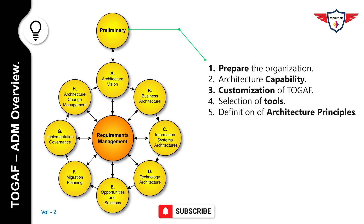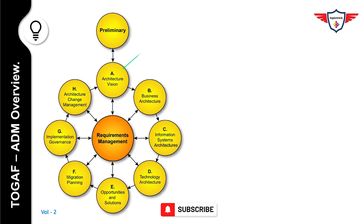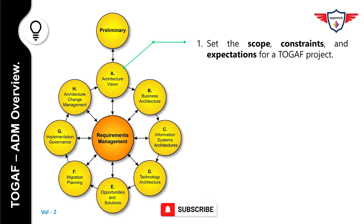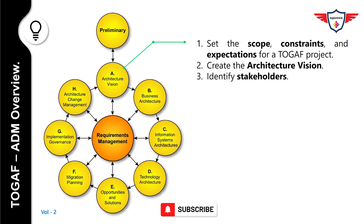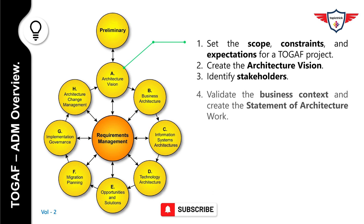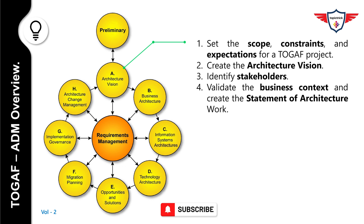Now let's look at Phase A, that is Architecture Vision. In this phase, you set the scope, constraints, and expectations for a TOGAF project. Create the architecture vision, identify stakeholders, validate the business context, and create the statement of architecture work. Then obtain approvals.